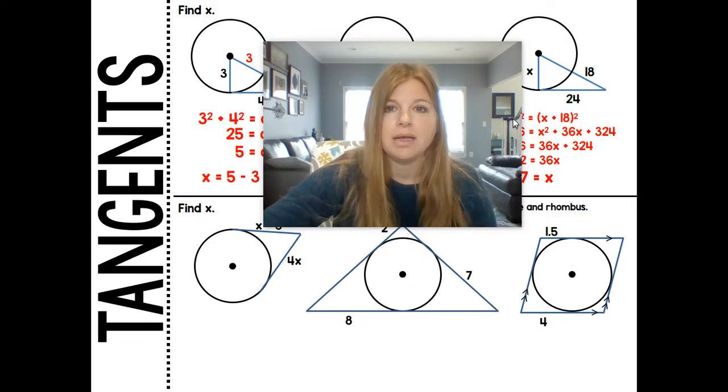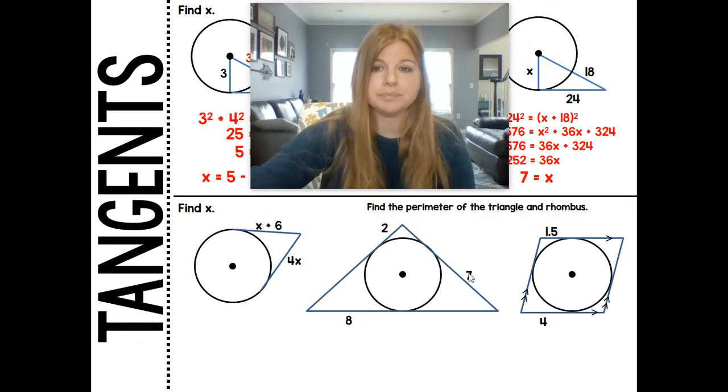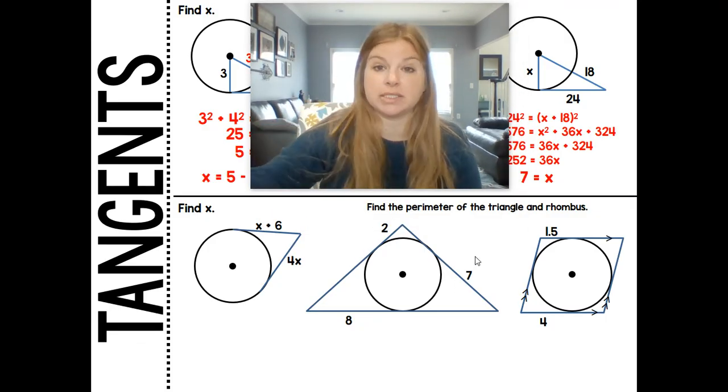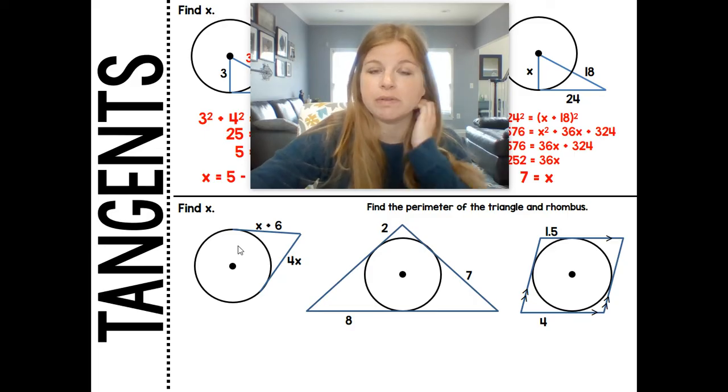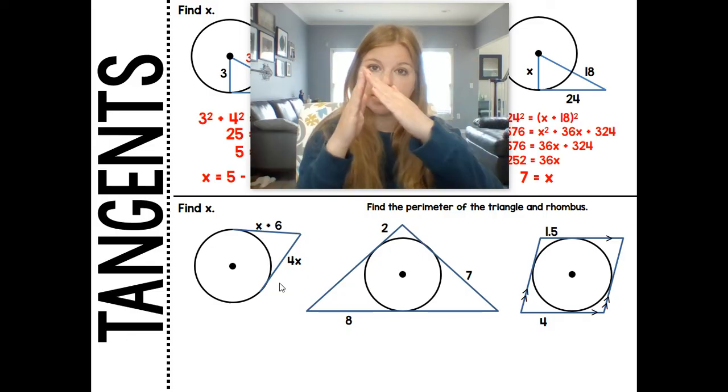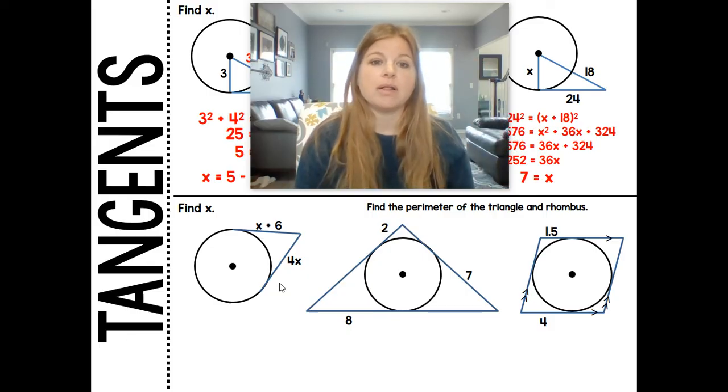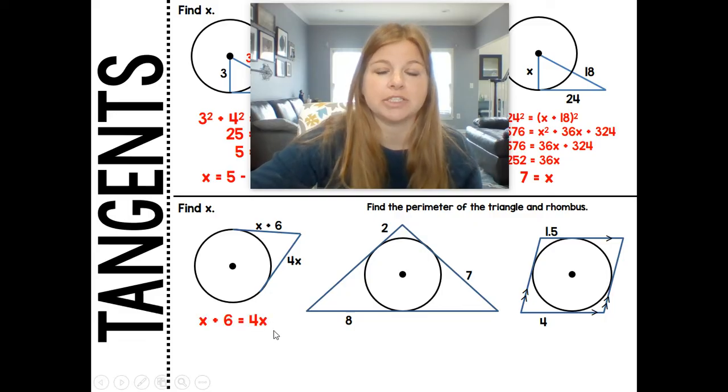Let's take a look at the problems down here. First one says just find X. Now, what we learned in the second part of the lesson was that anytime you have tangents that are intersecting on the outside of a circle, those segments are actually congruent to each other. So that means X plus 6 is actually equal to 4X.